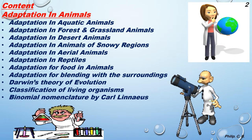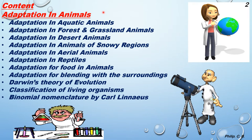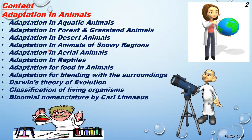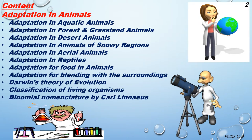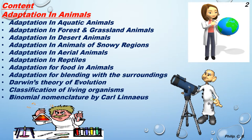In this part of the chapter we are going to learn: adaptation in aquatic animals, adaptation in forest and grassland animals, adaptation in desert animals, adaptation in animals of snowy regions, adaptation in aerial animals, adaptation in reptiles, adaptation for food in animals, adaptation for blending with the surrounding, Darwin's theory of evolution, and classification of living organisms including binomial nomenclature by Carolus Linnaeus. You can also see animations to think and ponder about things in the surrounding Earth - always observe and learn new things.